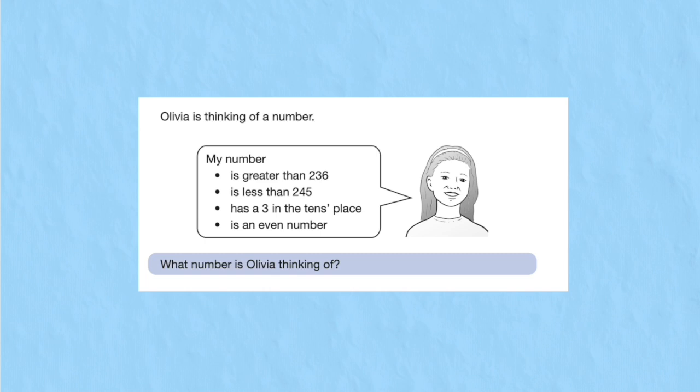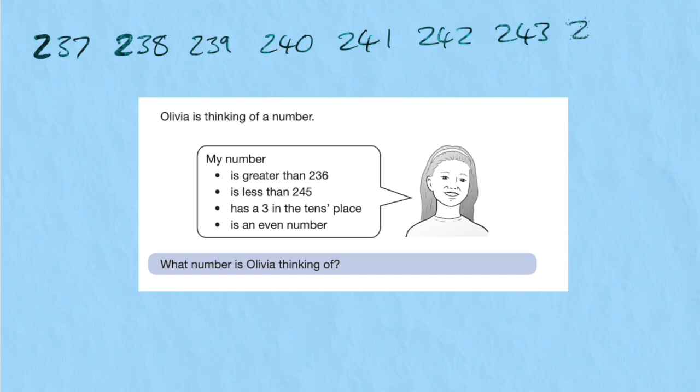So we say it's greater than 236. So we have 237, 238, 239, 240, 241, 242, 243, 244, but it's less than 245, so we know it can't be 245.